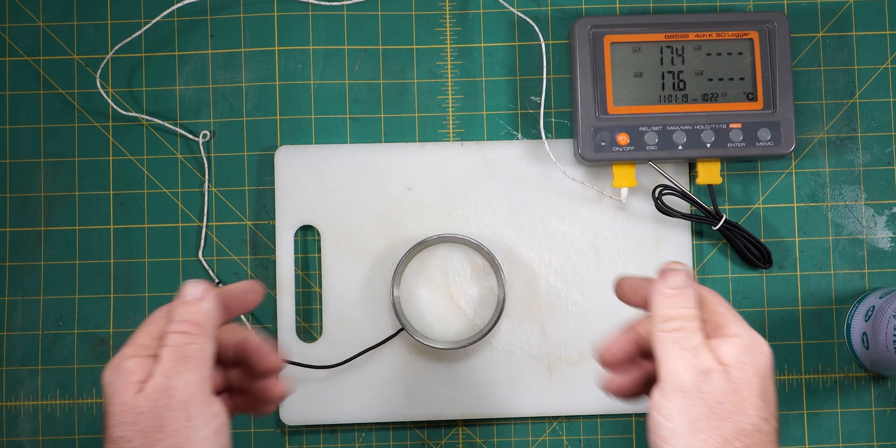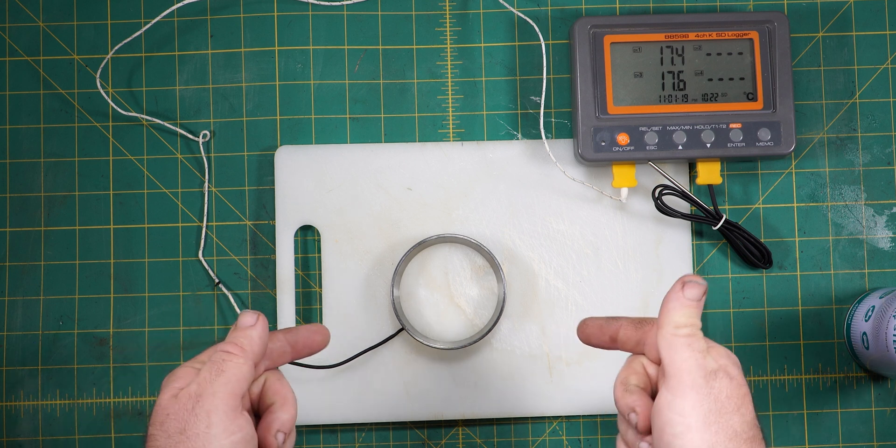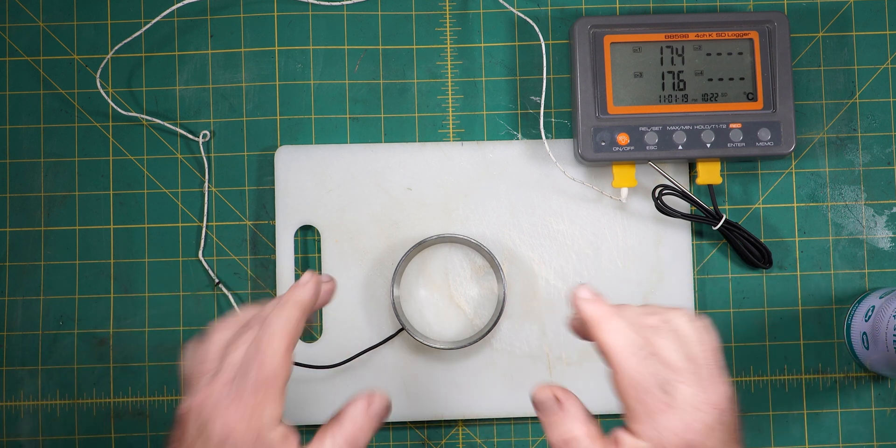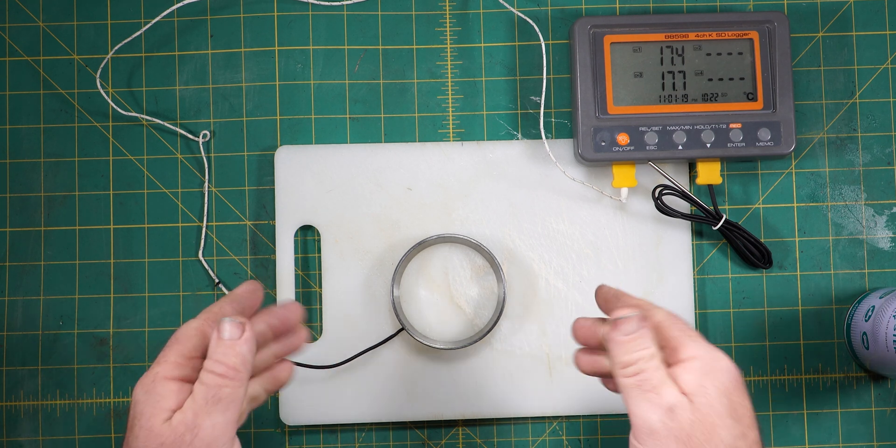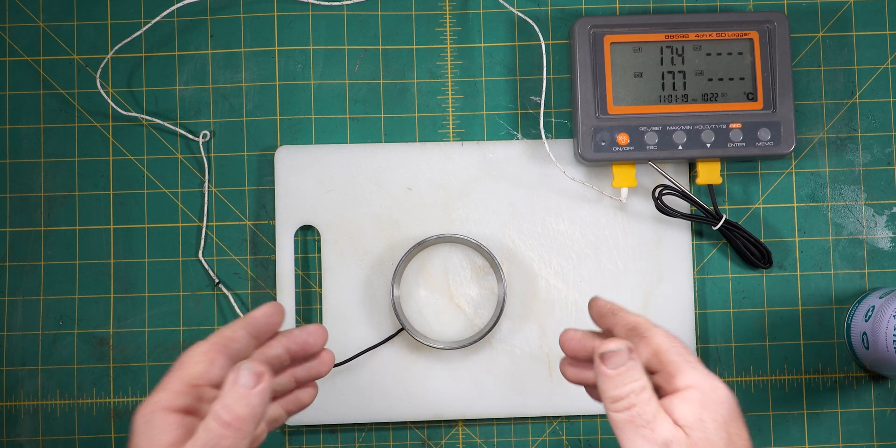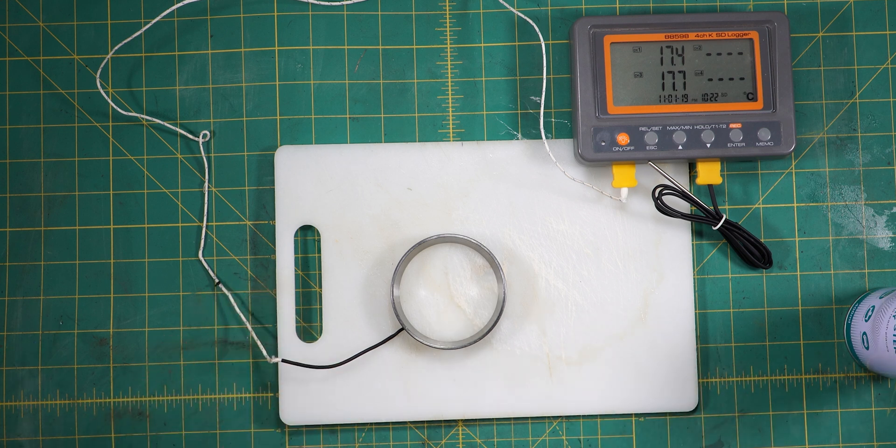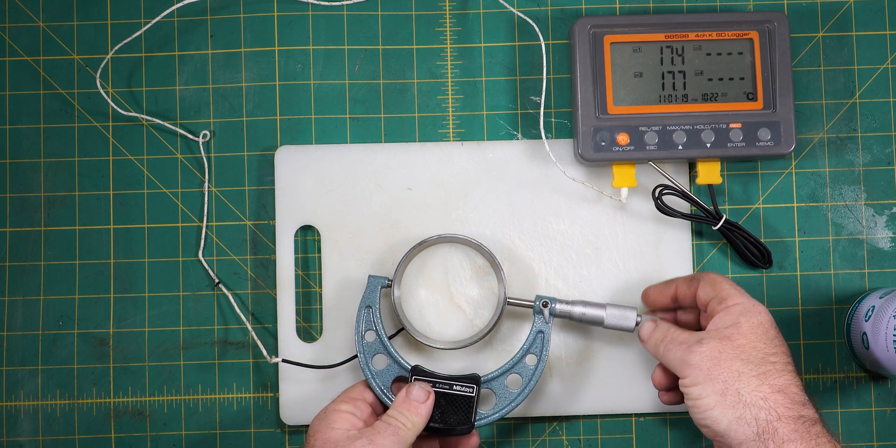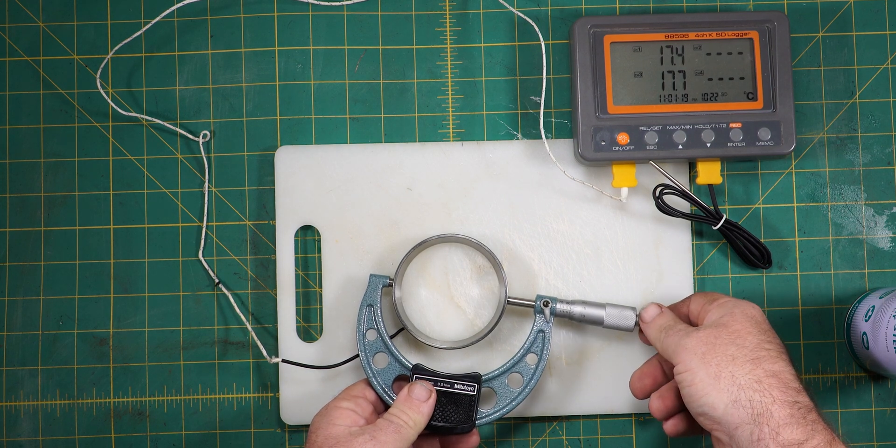So you have to press it in with a fair bit of force. And the higher the interference between the two, the harder you have to push. So by reducing the diameter of the bearing race, we can actually make it go in easier. So I've got a micrometer here.